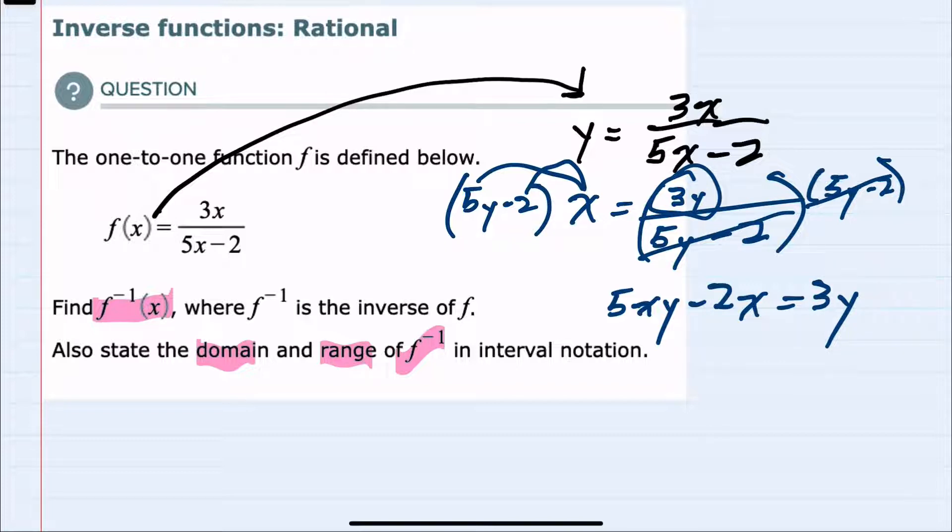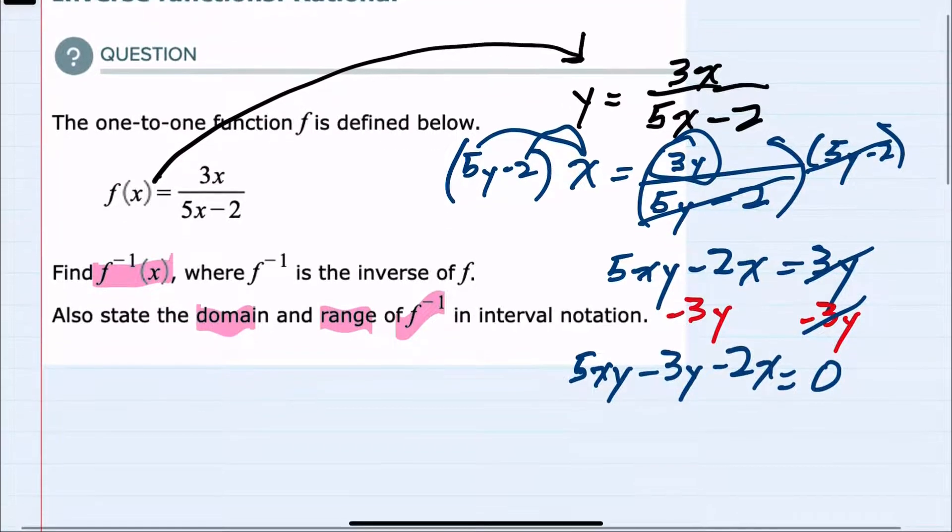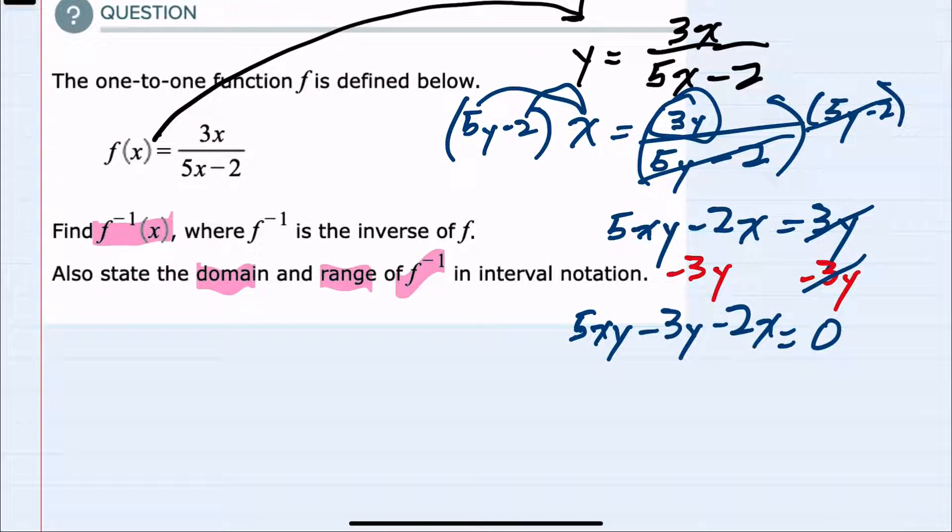So we're one step closer to solving this for y. I would next want to get the y's on the same side of the equation, so I'm going to subtract 3y from the left and right. This cancels on the right, leaving me with 0. On the left, I now have 5xy minus 3y minus 2x. So we've gotten our y's on the same side of the equation. Now we need to isolate those y's, and I can do so by adding the 2x to both sides. This will then cancel on the left, leaving me 5xy minus 3y equals 2x.